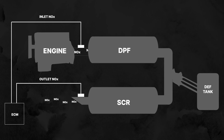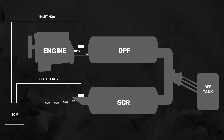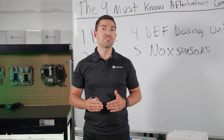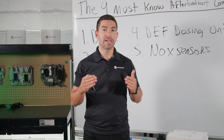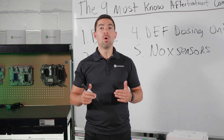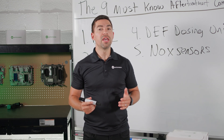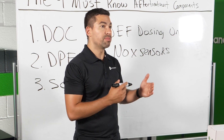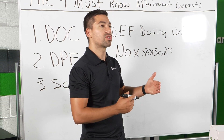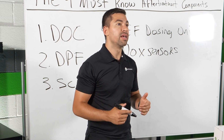These sensors are strategically placed before and after the SCR catalyst to measure the efficiency of NOx reduction. If a sensor is drifting because of contamination or simply failing, this can cause a sensor malfunction which is going to cause your truck to go into D-rate.